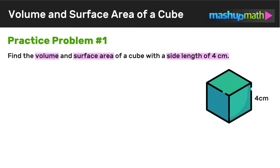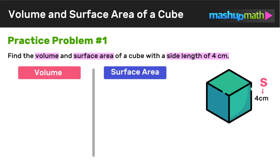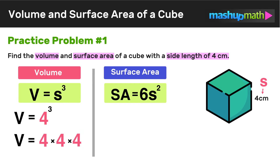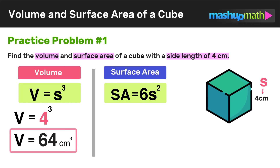In our first example, we have to find the volume and surface area of a cube with a side length of 4 centimeters. Our value for s is 4, since every side length of this cube equals 4. To find the volume, we use the formula v equals s cubed, so v equals 4 cubed. 4 cubed is equal to 4 times 4 times 4, which equals 64. So the volume of this cube is 64 cubic centimeters.